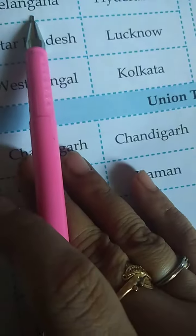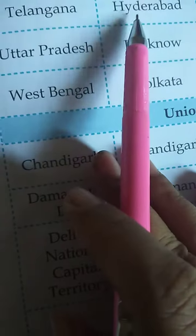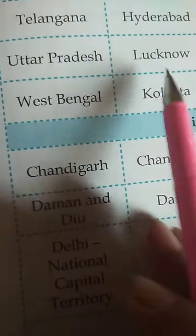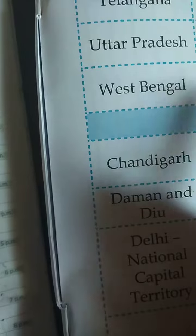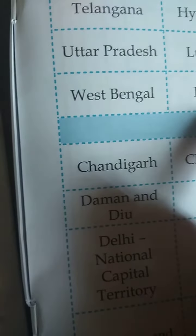Next is Telangana — Telangana's capital is Hyderabad. Uttar Pradesh's capital is Lucknow. West Bengal — we know that very well — Kolkata.